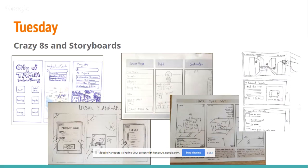Per the design sprint process, they completed the Crazy Eights activities synchronously with timing, then allowed individuals to create their storyboards independently. Interestingly, each team member inadvertently created storyboards addressing different parts of the journey without discussing this beforehand. When they combined their final storyboard, pieces from each individual's work fit together naturally without much recreation needed — they only had to revisit the beginning portion.